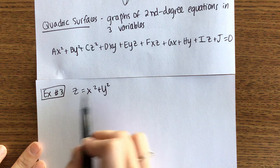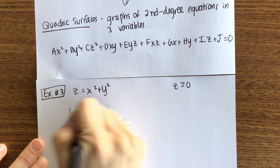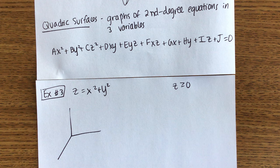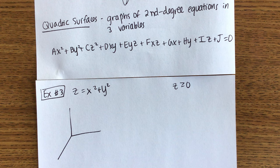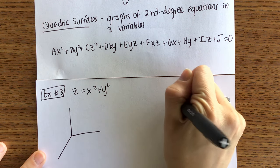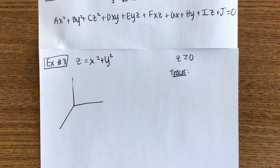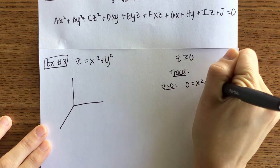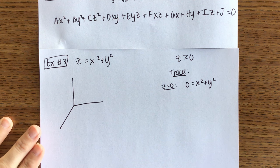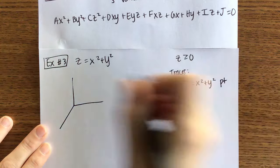For our first quadric surface, z equals x squared plus y squared. First thing to notice: z is always going to be positive — x squared and y squared are positive, so z is always going to be zero or bigger. So our graph is only going to be the top half. Instead of plugging in points, we're going to find what are called traces. What a trace means is you pick values for one of the variables. If I choose z to be zero, that gives me zero equals x squared plus y squared — it's just the origin.